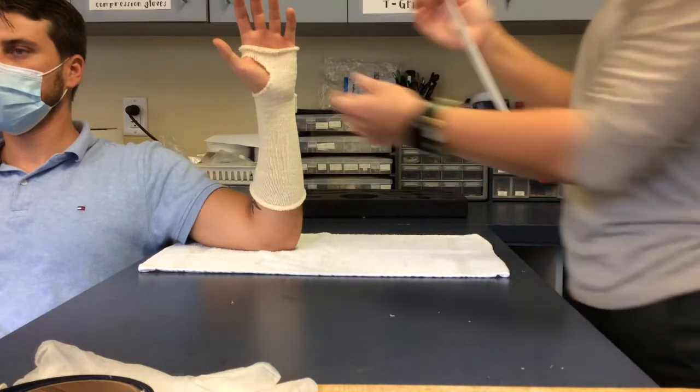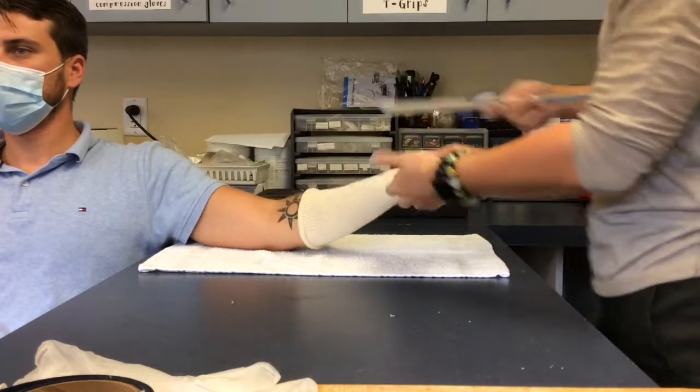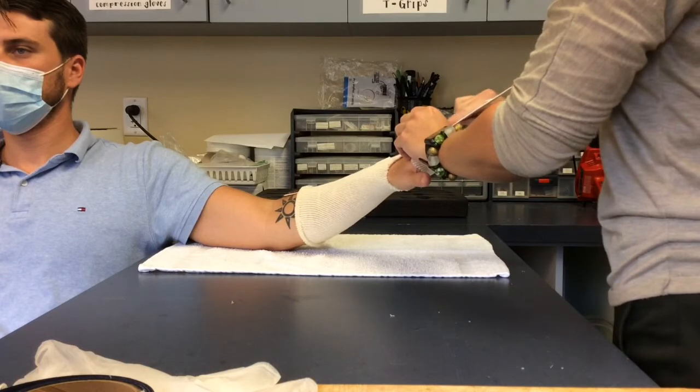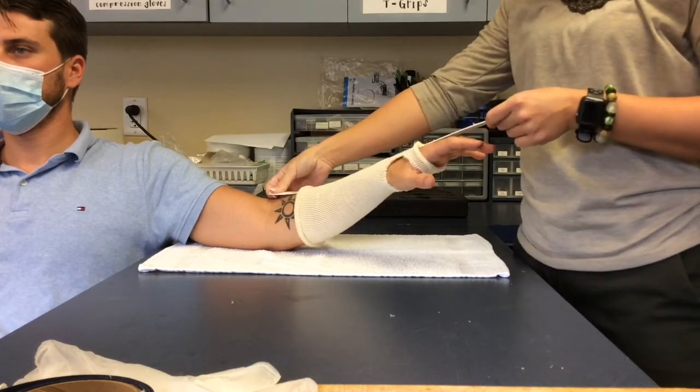Next, you want to get your cutting strip and place it over the dorsum of the hand and forearm. This is where you will be cutting the delta cast after it is complete.